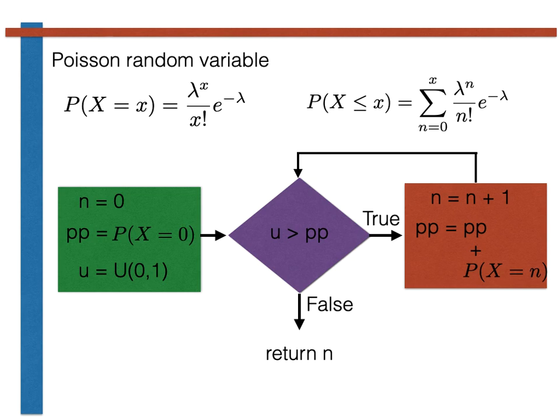If u is greater than pp, then we have still not identified what section of the segmented line u is within. We thus have to continue on and repeat the same steps that we did in the previous trip through the loop. We set n equal to 2 and then add p of x equals 2 to the variable pp. In fact, we simply need to keep on alternating the steps shown in the purple diamond and the red square until the condition shown in the purple diamond is no longer true. Once this condition is not true, the value of the Poisson random variable is equal to n.